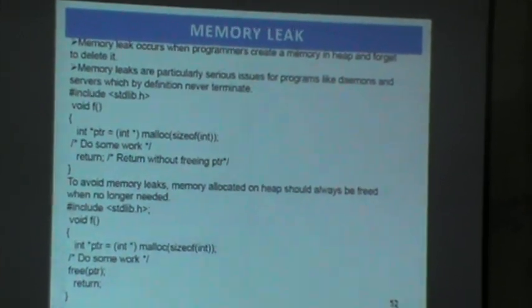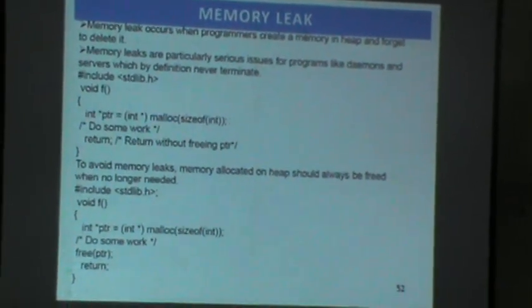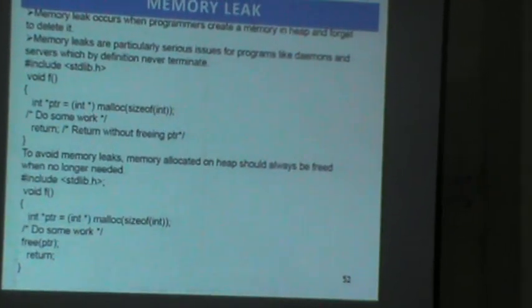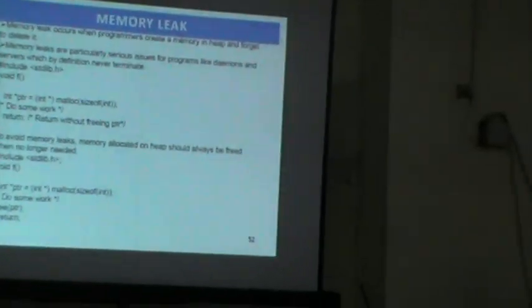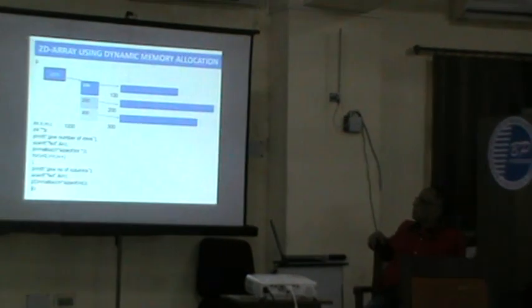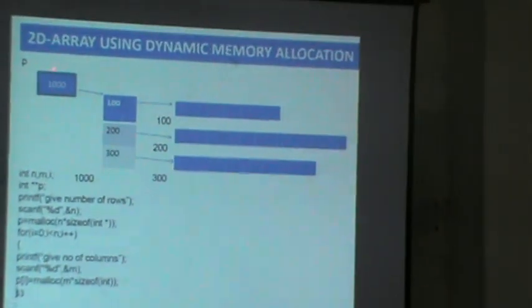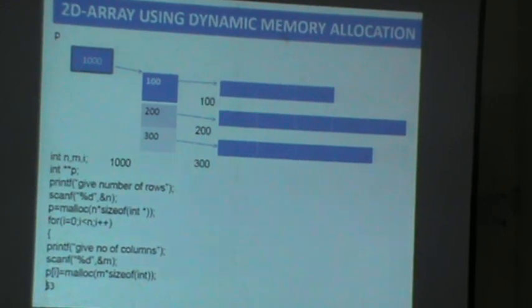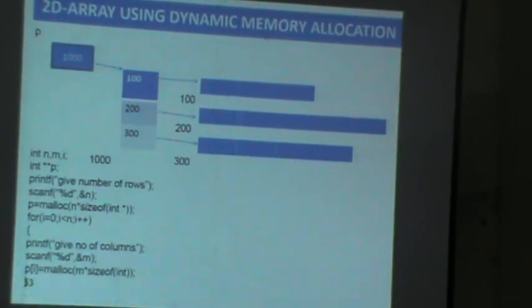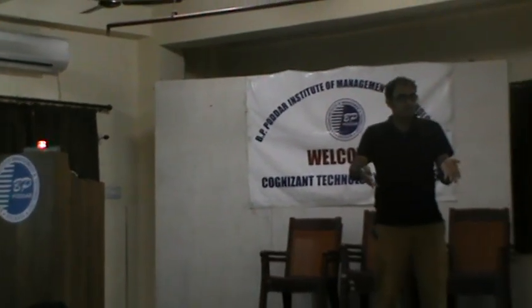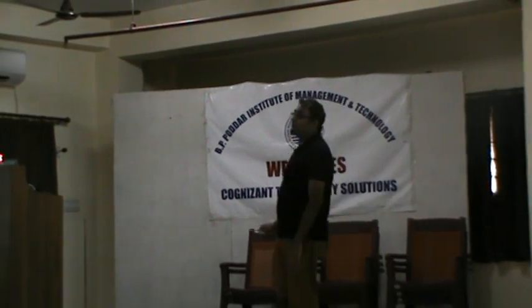When you are allocating memory from the heap, you should free the memory after operations. If you are not using this free, it becomes a corrupted memory leak. Any other program will not be able to use this memory, so this is known as a memory leak. This is one of the questions asked in interviews. 2D dynamic memory allocation is also important — a matrix can be 3x3, 4x4, or even 4x2.